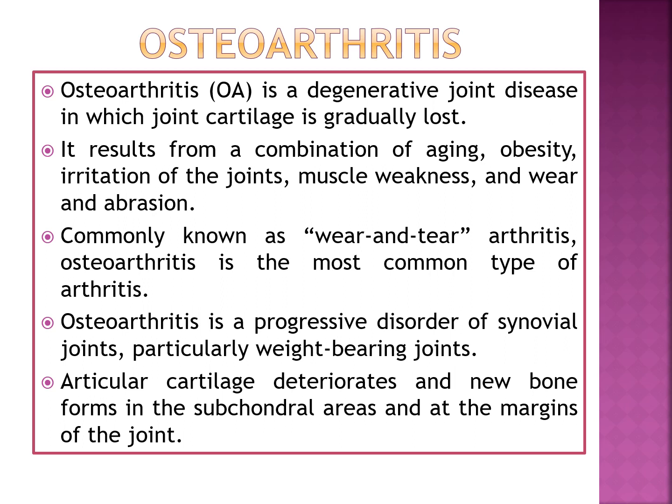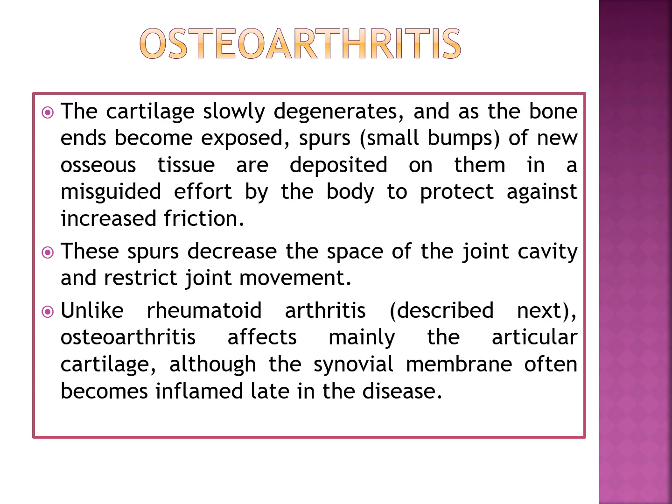What is the pathophysiology? The articular cartilage of the joint deteriorates and new bone forms in the subchondral areas and at the margins of the joint. As the cartilage slowly degenerates and bone ends become exposed, spurs — small bumps of new osseous tissue — are deposited on them in a misguided effort by the body to protect against increased friction. These spurs increase the space of the joint cavity and restrict joint movement.